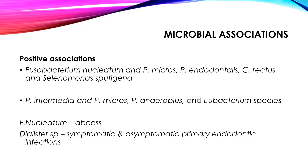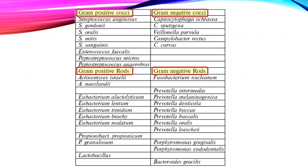Fusobacterium nucleatum is found in abscess cases, and in symptomatic and asymptomatic primary endodontic infection, you will be able to isolate Dialister species in many of these infections. A few organisms you must remember: there are four types — gram-positive cocci and rods, and gram-negative cocci and rods. In gram-positive cocci: Streptococcus species starting from anginosus, then Enterococcus faecalis, and Streptococcus species, typically the micros and anaerobius species.